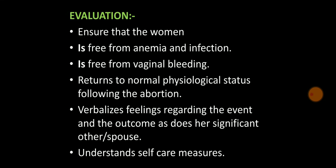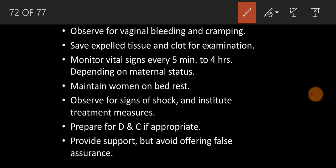Now in implementation — what will be your interventions? First, observe the vaginal bleeding and cramping: how much vaginal bleeding is occurring and where and how the cramping is happening — that will be your first intervention. Save expelled tissues and clots for examination — all tissue cells and clots that come out, save them and send for examination. Monitor vital signs every two to four hours periodically, depending on the mother's status.